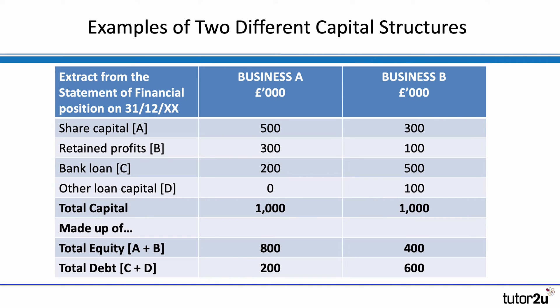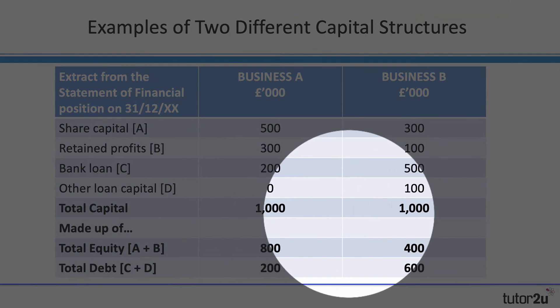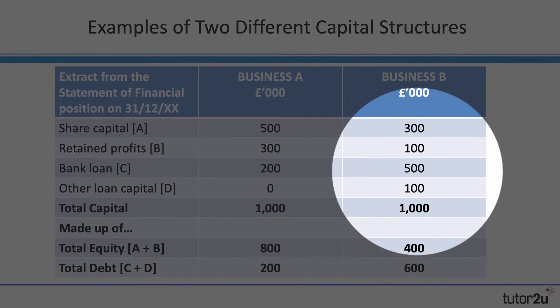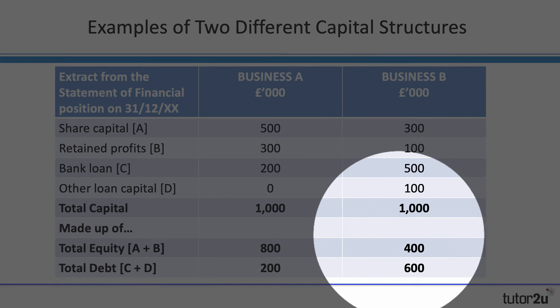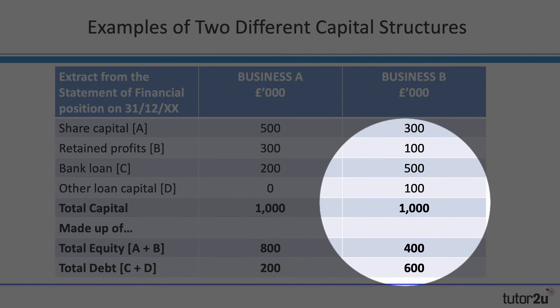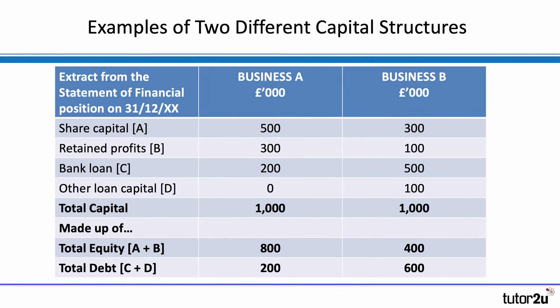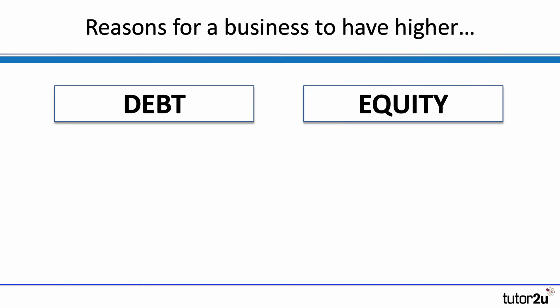Compare and contrast with Business B, which also has £1,000,000 worth of capital or finance, but in this case it has a lot more debt. Business B has half a million of bank loan and £100,000 of another loan — so £600,000 of the million is debt. Business B therefore has a higher debt-equity ratio, while Business A has more equity than debt.